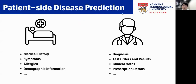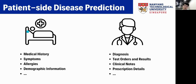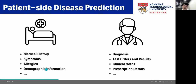Our task is called Patient-Side Disease Prediction. In our disease prediction problem, we already have two sides of information. The first is the Doctor-Side Information, which includes, for example, diagnosis results and test order results. Usually this information is more professional and hard to obtain. Another side is called the Patient-Side Information, including basic information like demographic information and medical history.